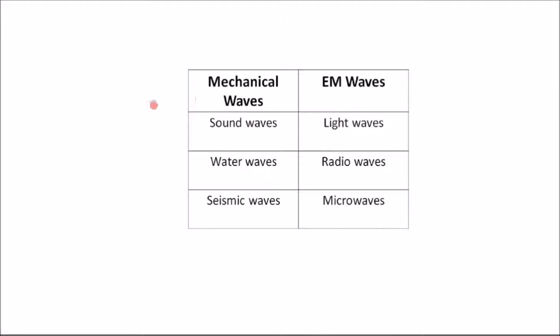Mechanical waves require a physical substance to travel through, and that's what's known as a medium. So they need a medium to travel through. So for example, water waves need water to travel through. Without the water there would be no water wave. It would be impossible for the water wave to travel.